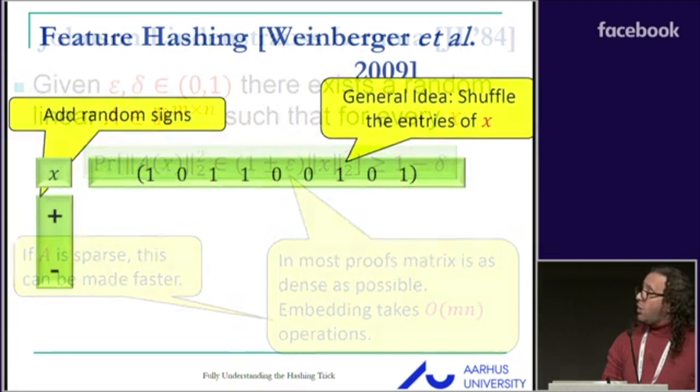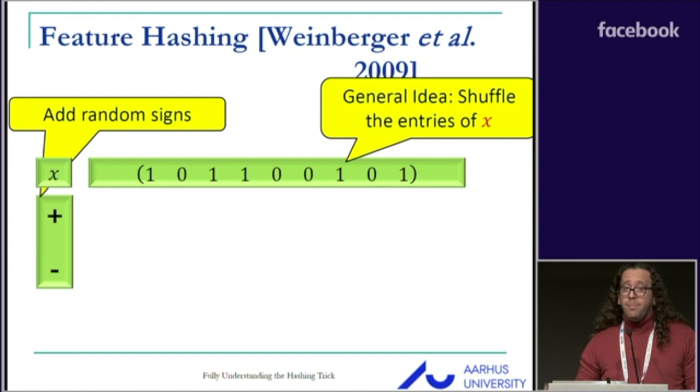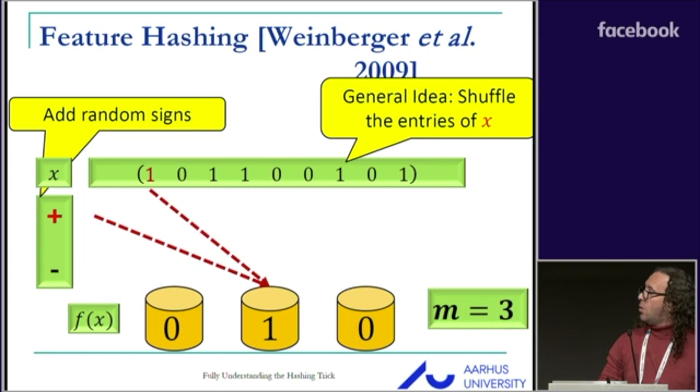In 2009, Weinberger presented feature hashing. The basic idea is to take the entries of X and map them into M buckets and shuffle them with random signs, where the projected vector is attained by summing the entries inside each bucket.